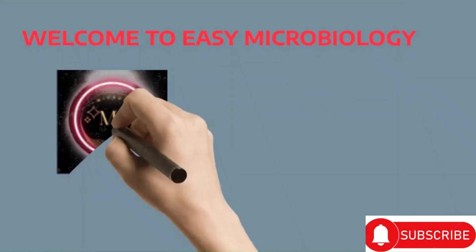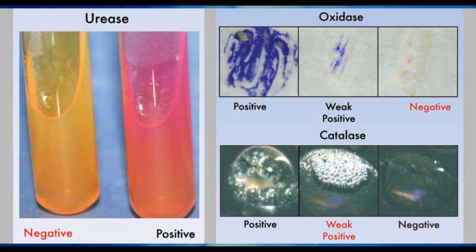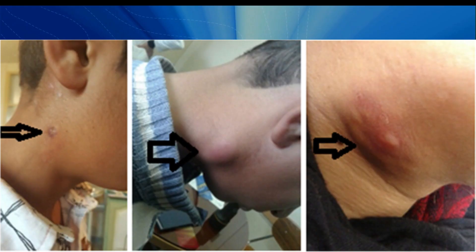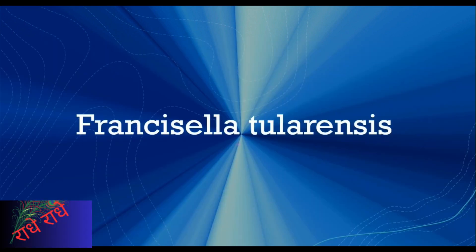Welcome to Easy Microbiology. Today, we will be discussing Francisella tularensis, a highly infectious gram-negative bacterium that can cause the zoonotic disease known as tularemia. We'll look at the bacteria's morphology, cultural characteristics, biochemical characteristics, host range, virulence factors, and mechanisms of antibiotic resistance.